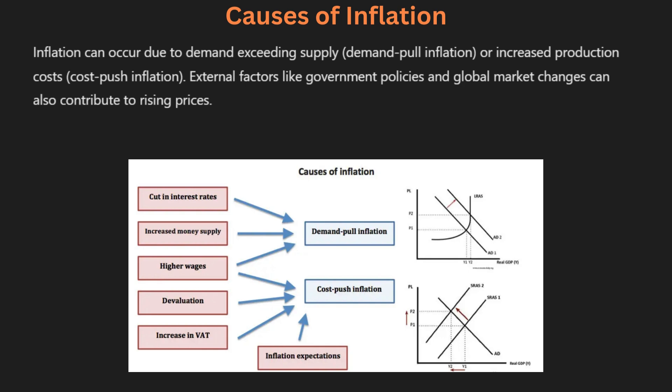There are several causes of inflation, which can be broadly categorized into two types. The first is demand-pull inflation, which occurs when demand for goods and services exceeds supply. This leads to higher prices because consumers are willing to pay more. The second type is cost-push inflation, which happens when the cost of production increases, such as higher wages or material costs. Other factors can also contribute, such as natural disasters disrupting supply chains.